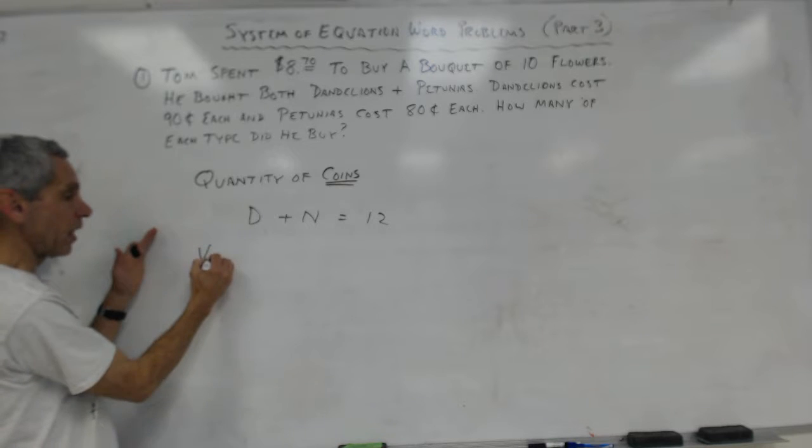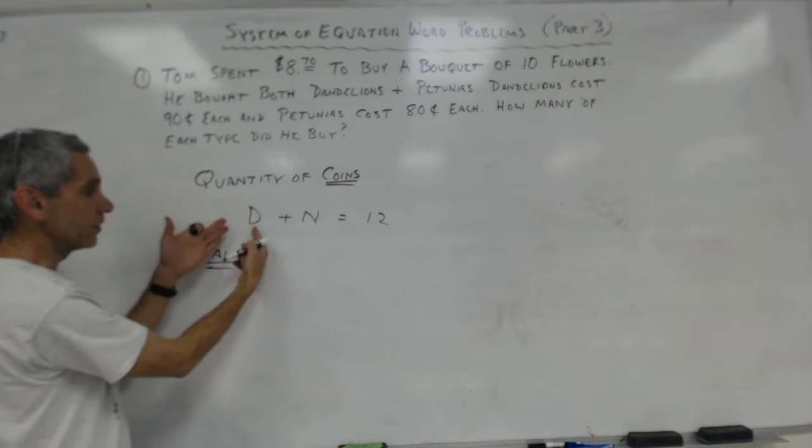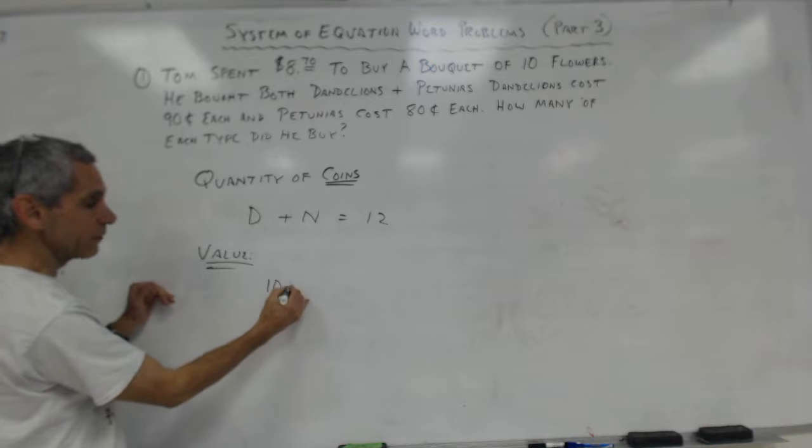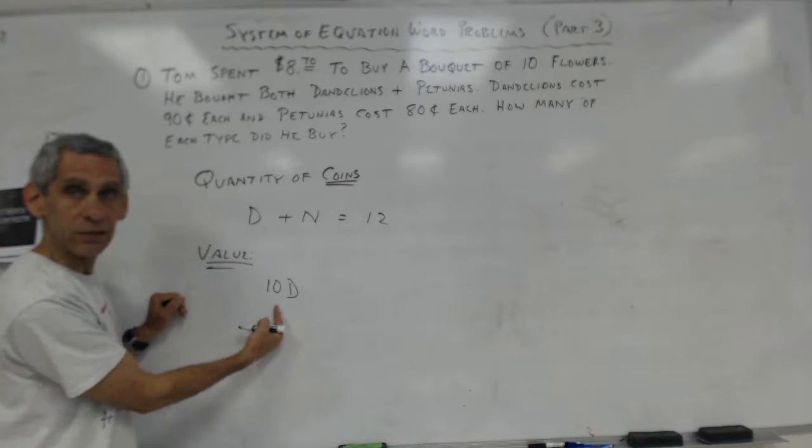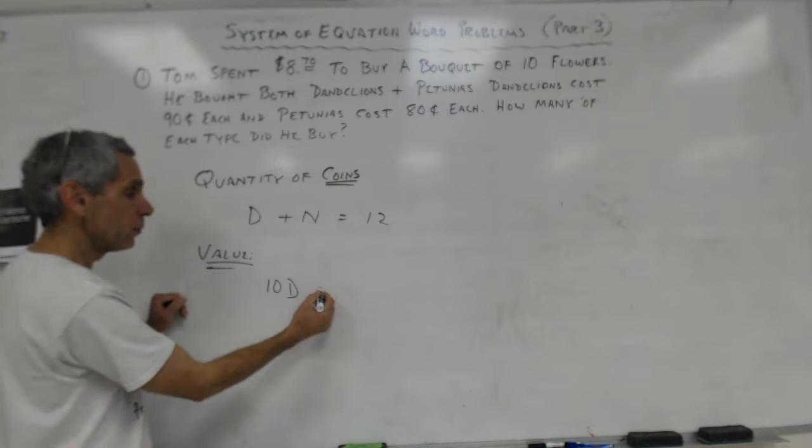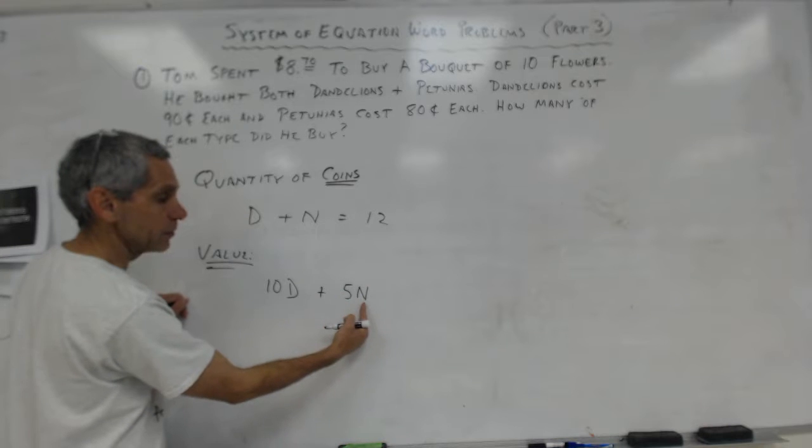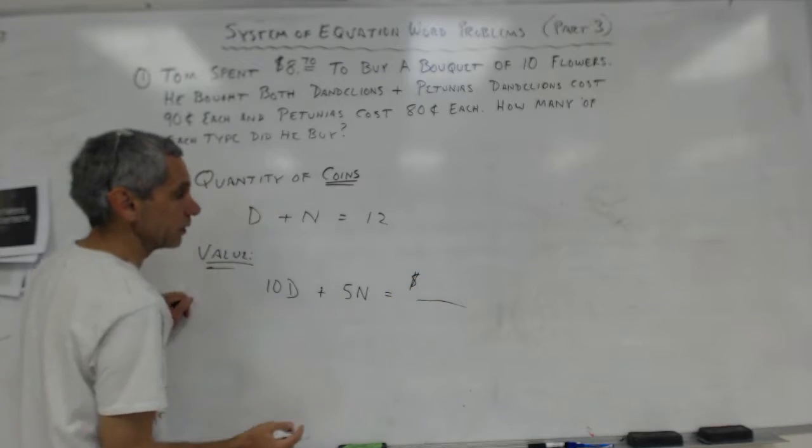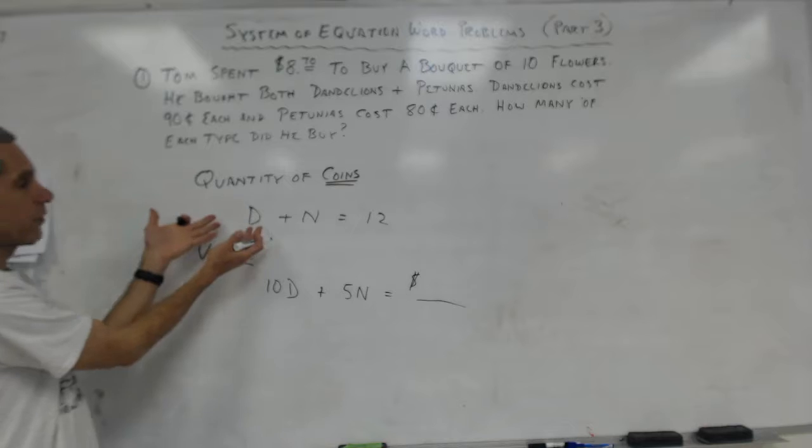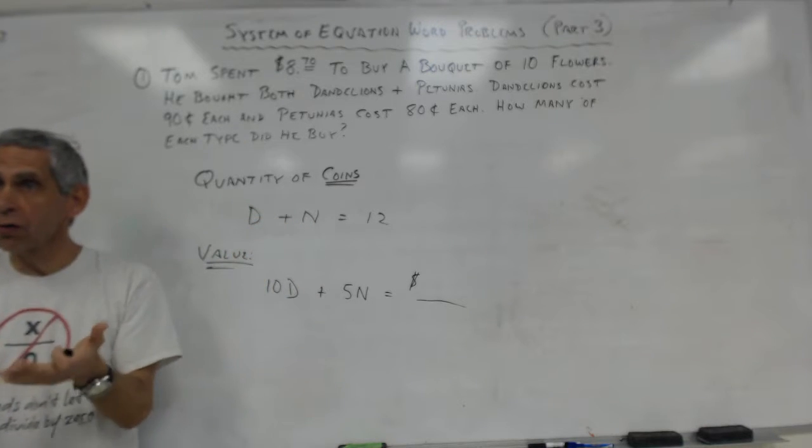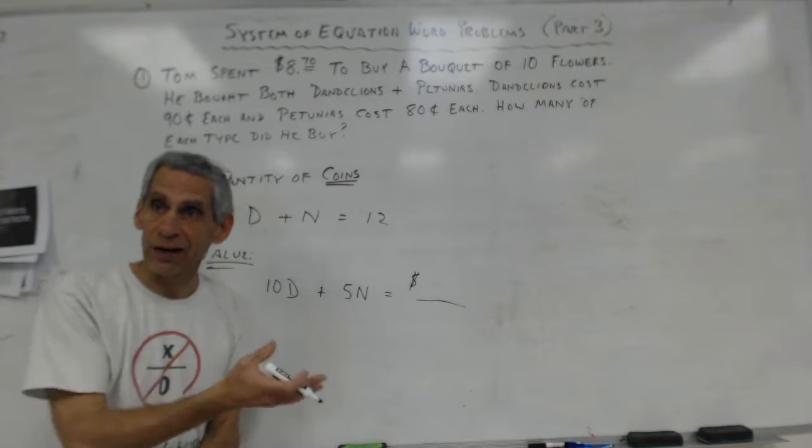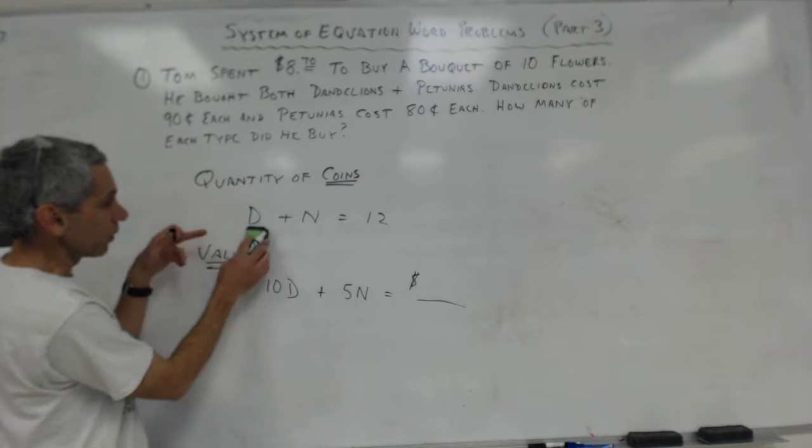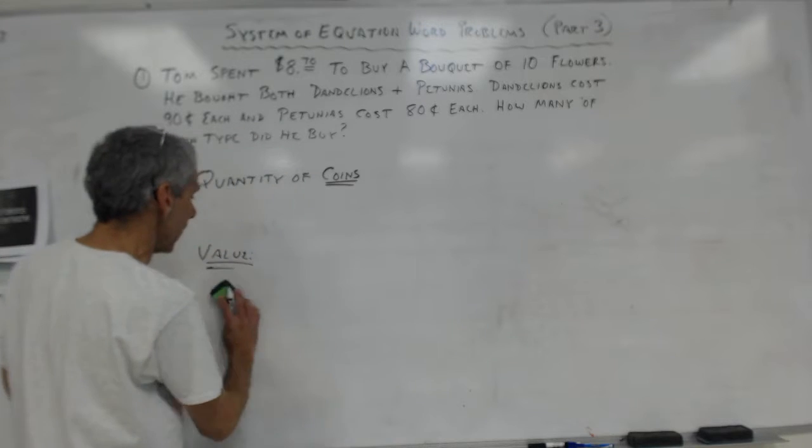How much did the dime cost? The dime cost ten cents. So you would put a ten in front of the D. Ten cents times the number of dimes gives you the value of the dimes you have. Plus nickels are five cents, so it would be five N. That gives you the value of your nickels equals your total amount of money. This is the same thing.